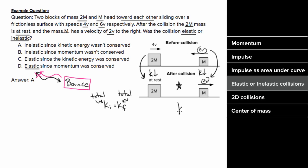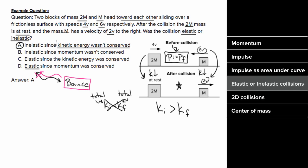So if the kinetic energy of both masses went down, then the final kinetic energy after the collision has to be less than the initial kinetic energy, which means kinetic energy was not conserved, and this collision had to be inelastic. One final note, even though kinetic energy wasn't conserved during this process, the momentum was conserved. The momentum will be conserved for both elastic and inelastic collisions. It's just kinetic energy that's not conserved for an inelastic collision.